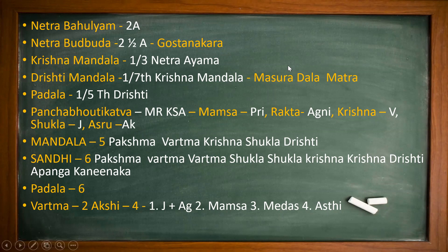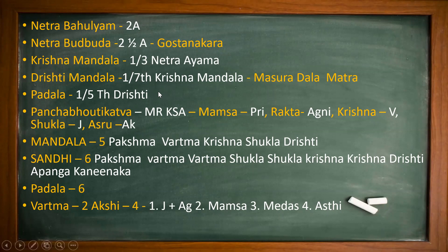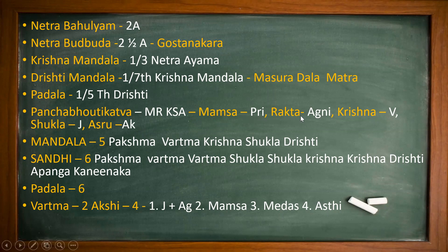Recap: Netra Bahulyam is 2 Angula. Netra Budbuda is 2.5 Angula and is Gostanakara. Krishna Mandala is 1/3rd Netra Ayama, Drishti Mandala is 1/7th Krishna Mandala — Masura Dhala Matra. Padala is 1/5th Drishti. Pancha Baudhi Gattam mnemonic MRKSA: Mamsa-Prithvi, Rekta-Agni, Krishna-Vayu, Shukla-Jala, Asru-Akasha. Mandalas: 5 — Pakshma, Vartma, Krishna, Shukla, Drishti.